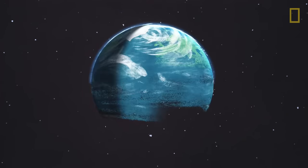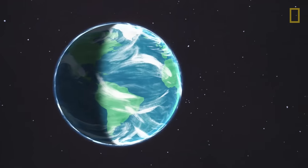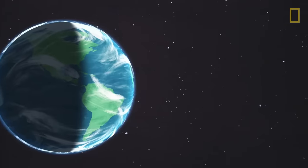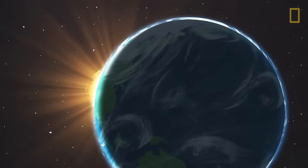15 to 35 kilometers above Earth's surface, a gas called ozone surrounds the planet. The ozone layer acts as a barrier between Earth and ultraviolet radiation from the sun.